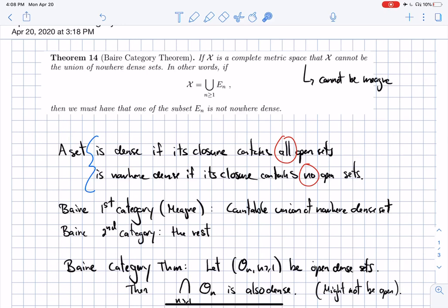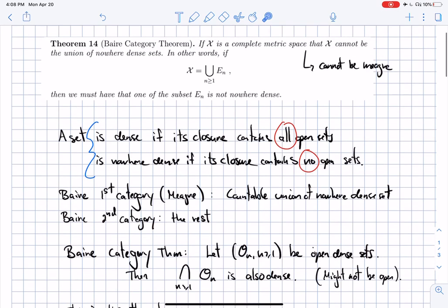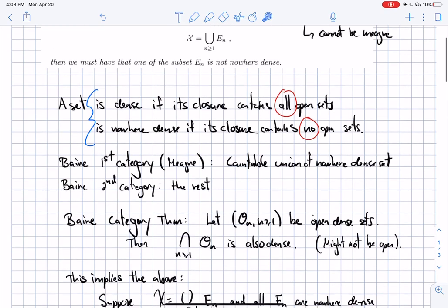Why is it called the category theorem? Because in Baire's thesis, where he proved this, it separates the different sets into two different categories. The meager sets are the ones that can be written as a countable union of nowhere dense sets. And the second category are just the others. Another way to express the Baire category theorem is to say that a complete metric space is never meager.